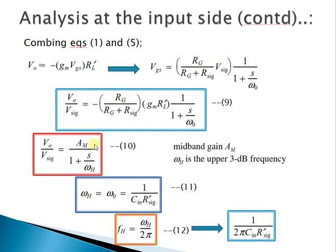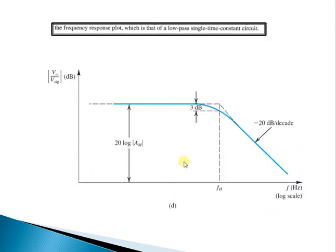Combining equations 1 and 5, Vout/V_signal equals −[RG/(RG + R_signal)] × GM×RL_dash × 1/(1 + S/ω0), as equation 9. This equals AM/(1 + S/ωH), where AM is the midband gain equal to RG/(RG + R_signal) × GM×RL_dash, and ωH = ω0 = 1/(CIN × R_signal_dash). FH is computed as ω/2π = 1/(2π×CIN×R_signal_dash).